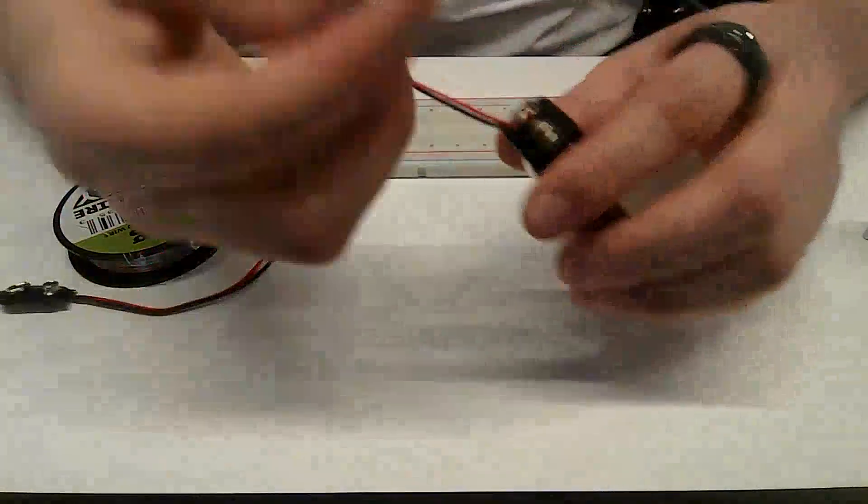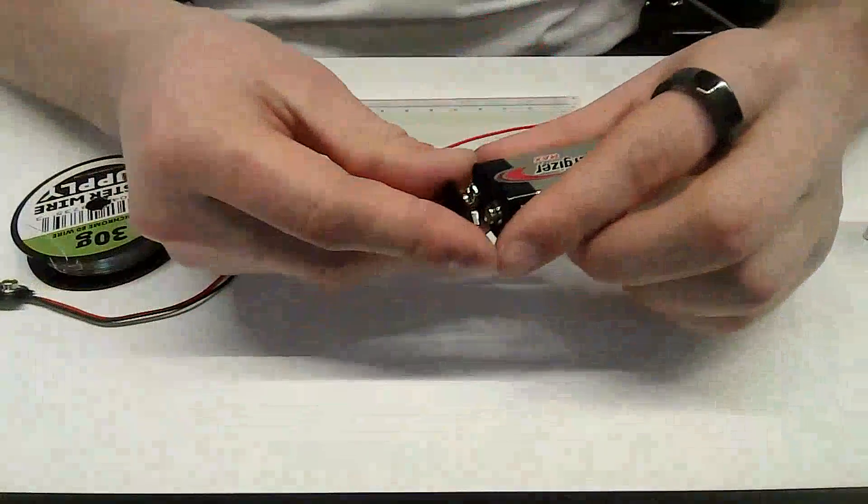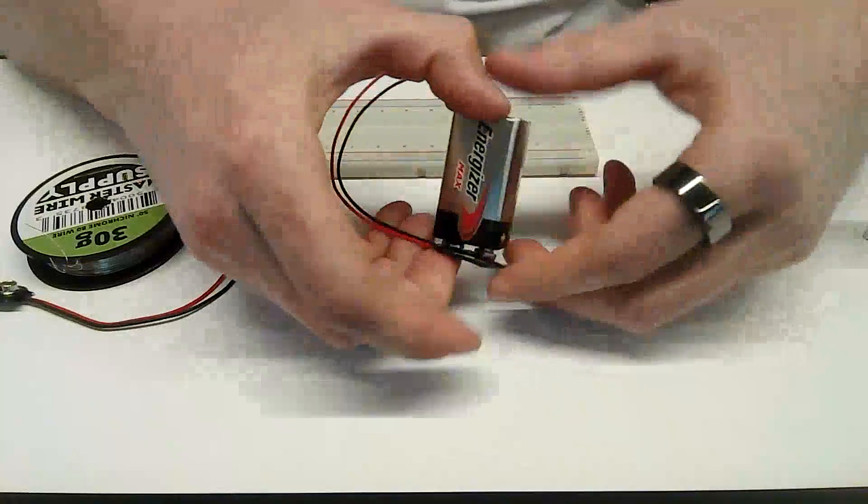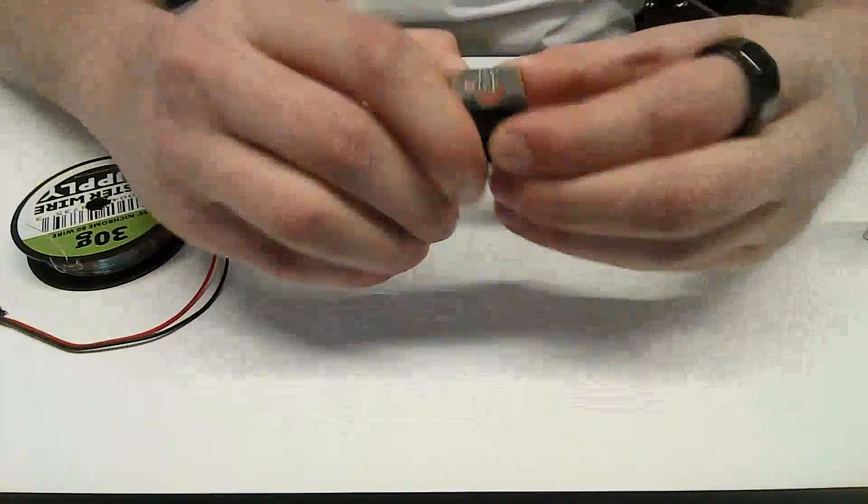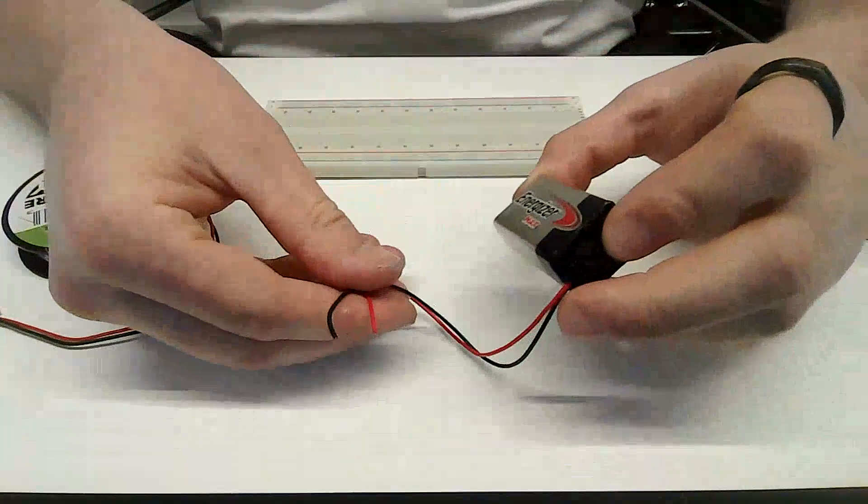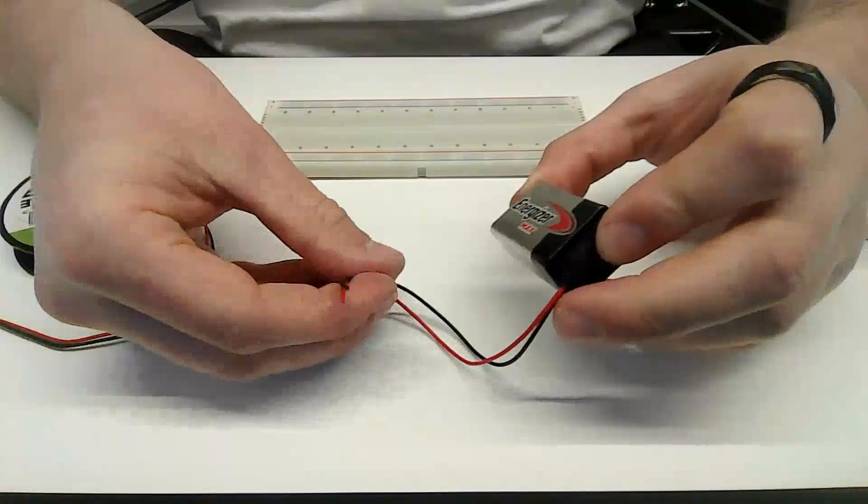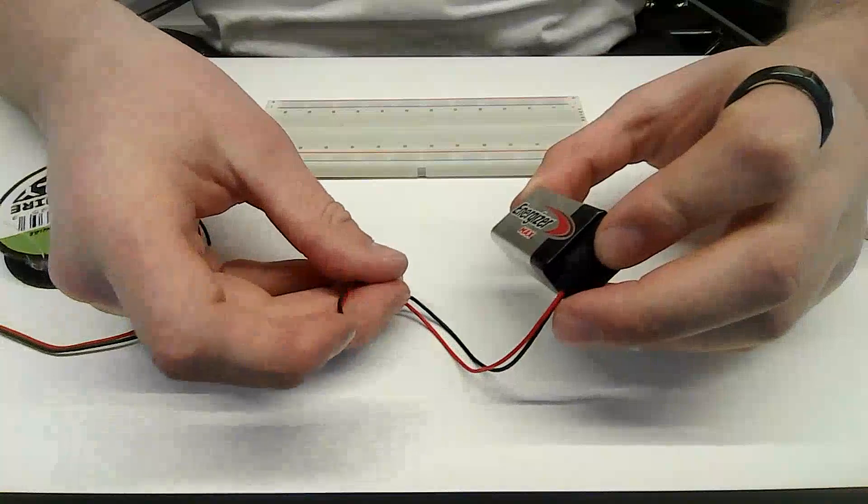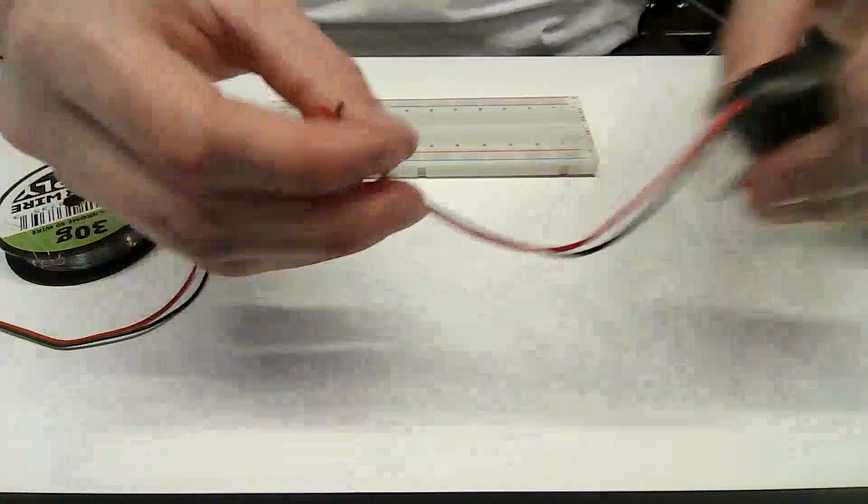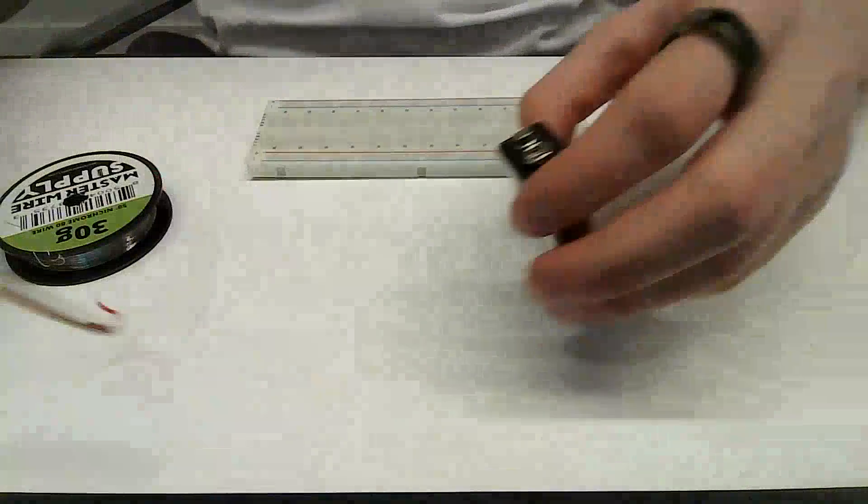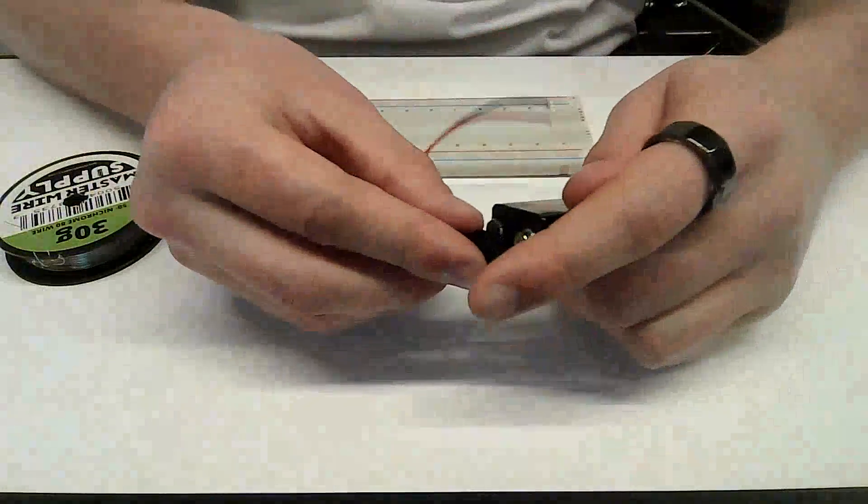So first things first, we're going to put the battery snaps on the batteries. You just snap right on. Make sure the students don't let these two wires stay in contact with each other because that's just going to short circuit the battery and cause the battery to heat up and lose its power. Do that for both batteries.